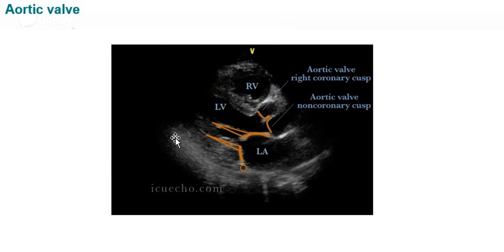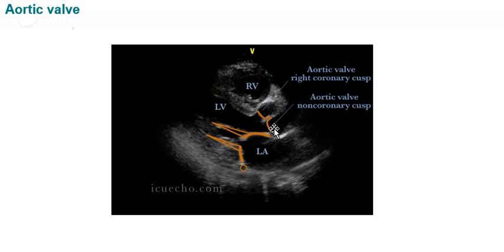The aortic valve is well visualized in this view. We can see the two cusps of the aortic valve: the right coronary cusp and the non-coronary cusp. The left coronary cusp is not easily visualized. Clear apposition of both valve leaflets and the size of the aortic root can be assessed.